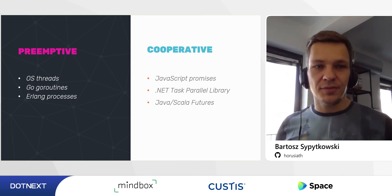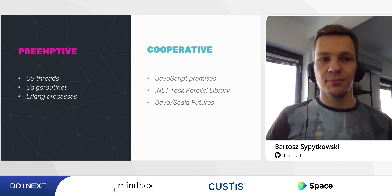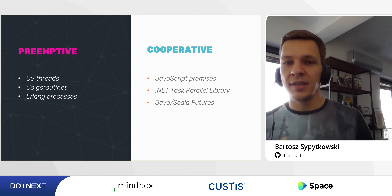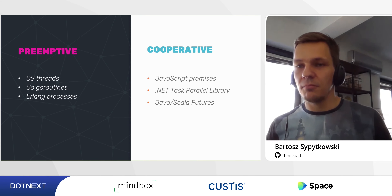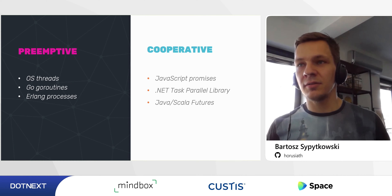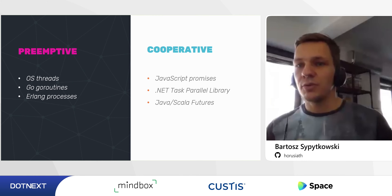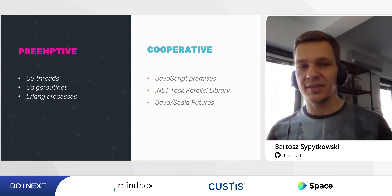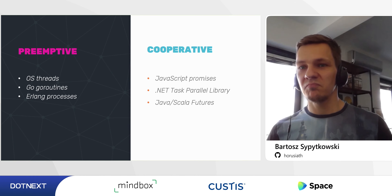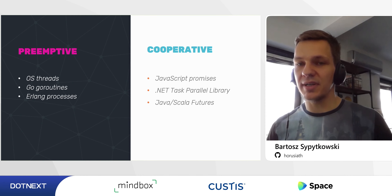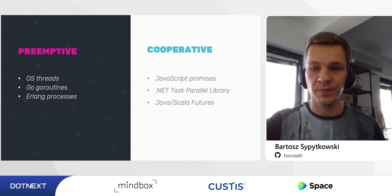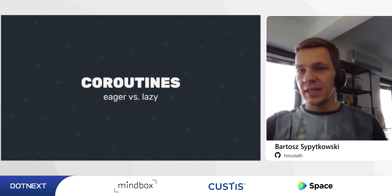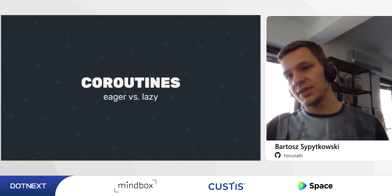In summary: preemptive schedulers are used by OS threads, goroutines, and Erlang processes. Cooperative schedulers are much more popular simply because you can create your own scheduler as a library, whereas preemptive mechanisms need to be baked into the runtime or compiler itself. Now let's move on to coroutines — user space threads.